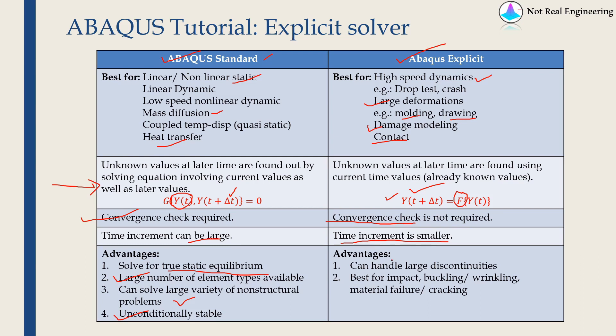On the other hand, for Abaqus explicit, it can handle large discontinuities. That is a huge advantage when you solve crash problems or problems involving fracture. And it is best for impact, buckling, wrinkling, material failure and cracking.